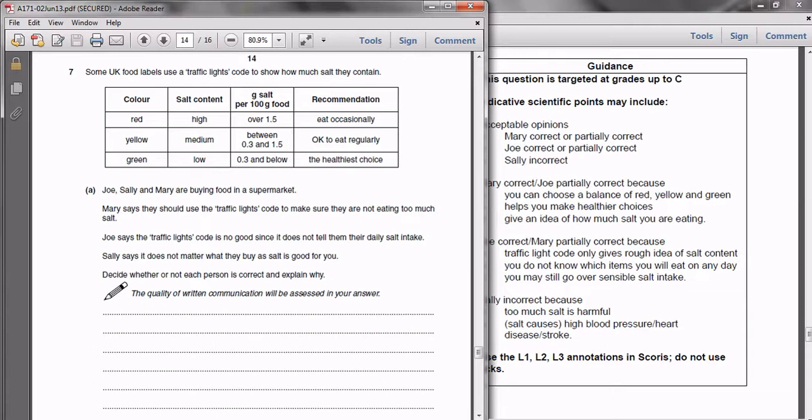You are given some information about traffic light coding in terms of how much salt is recommended within food. You are then given three statements from three different people. The first is Mary says that they should use traffic light codes to make sure that you're not eating too much salt.